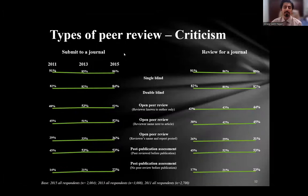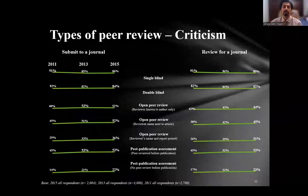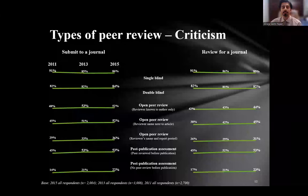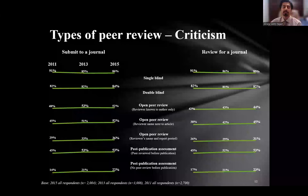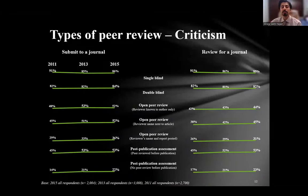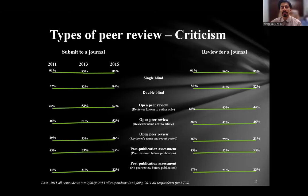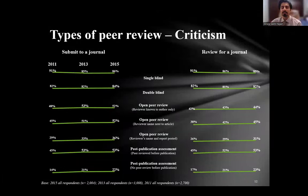Survey results show how authors and reviewers prefer different types of peer review — whether they want to publish their own manuscript or are willing to review for a journal with that type of peer review. Single-blind and double-blind are the most popular choices, whether for authors submitting manuscripts or researchers willing to review for those journals. Open peer review is not very popular amongst researchers.